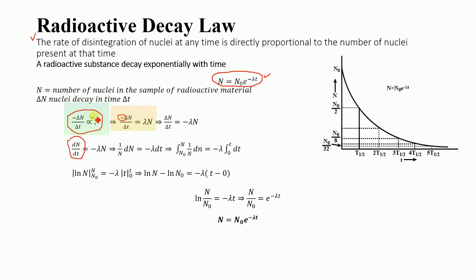Removing the proportionality sign, we can replace it with λ. So we have −dN/dt = λN, where λ is the constant of proportionality, known as the decay constant. The value of λ depends on the nature of the element, and different elements have different values for λ.